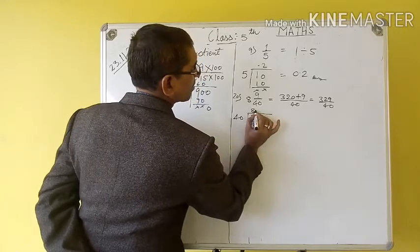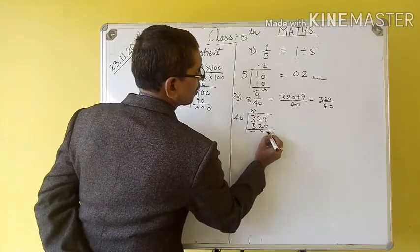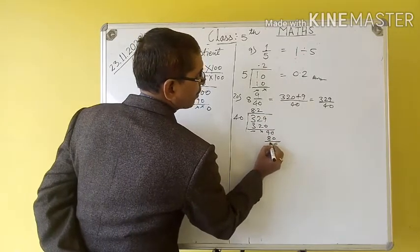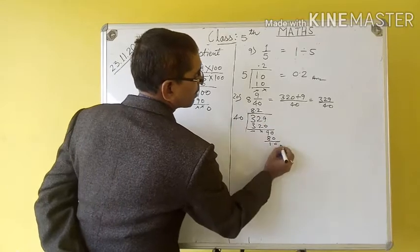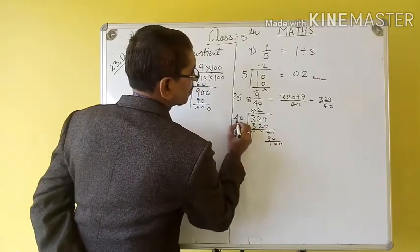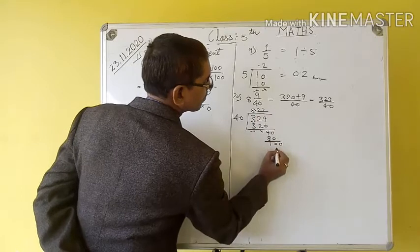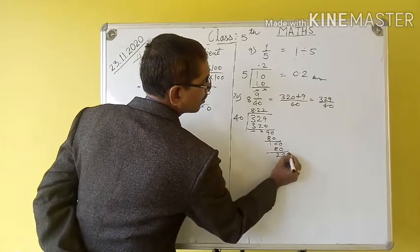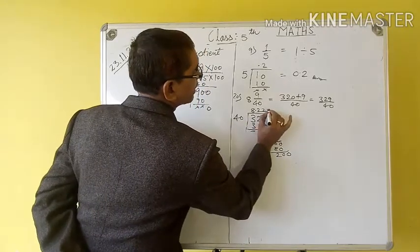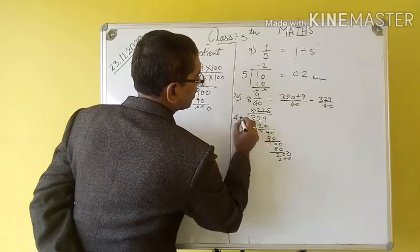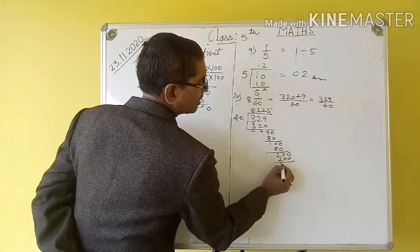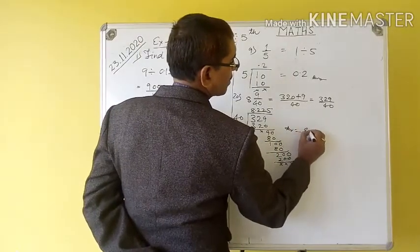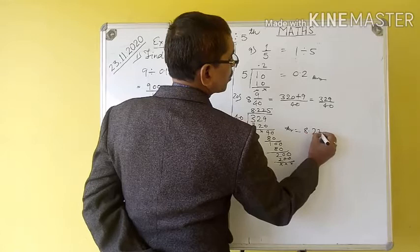Now we'll use the decimal: 0, 40 into 80, 0, 9 minus 8 is equal to 1. Now next 0, 40 into 80, remainder 20. Now we use next 0, 40 into 200, 5 into 20 is 500, 5 into 20. So our answer is 8.225.